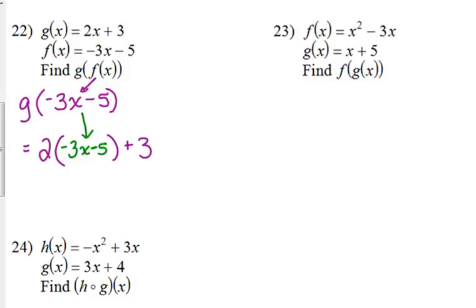Now, leave that blank space for where x wasn't in its place. I'm going to put negative 3x minus 5. And then we simplify. Distribute the 2. Negative 6x minus 10 plus 3. Combine like terms. Negative 6x minus 7.